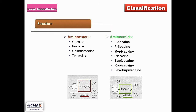Based on the structure, they can be broadly classified into two categories: amino esters and amino amides. Some examples of esters are cocaine, procaine, chloroprocaine, and tetracaine, whereas amino amides include lidocaine, prilocaine, and so on.